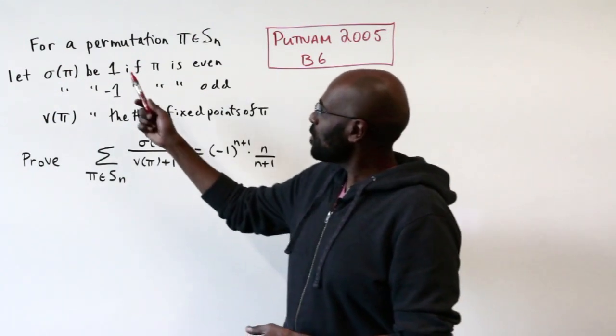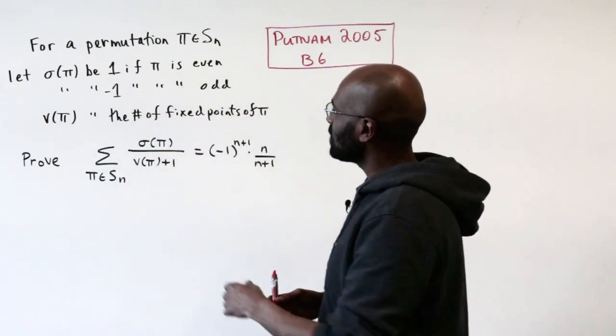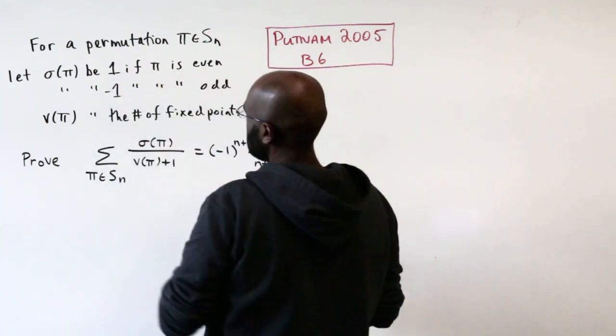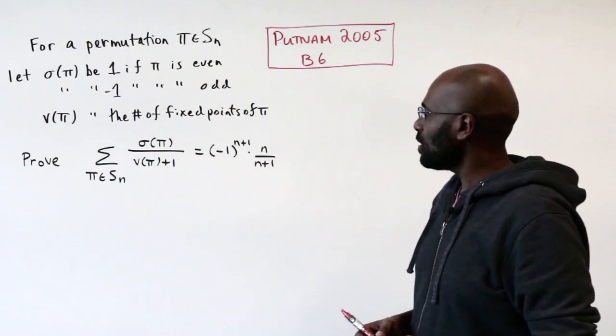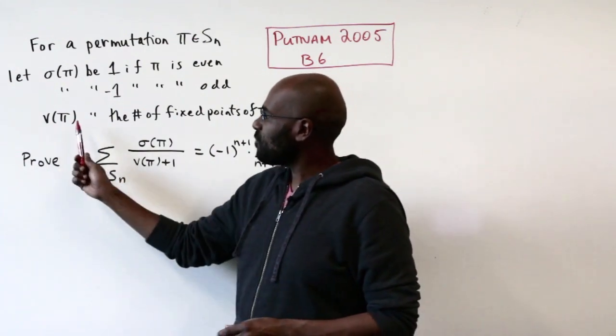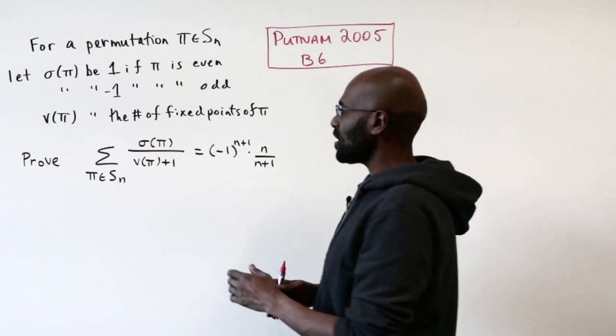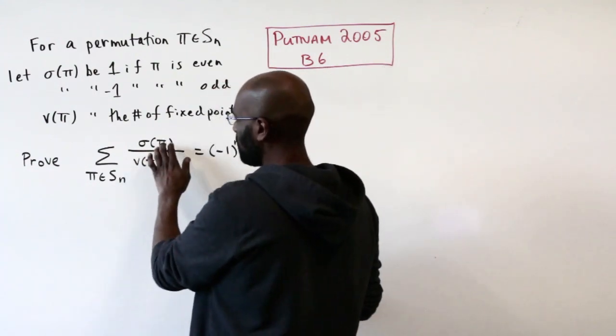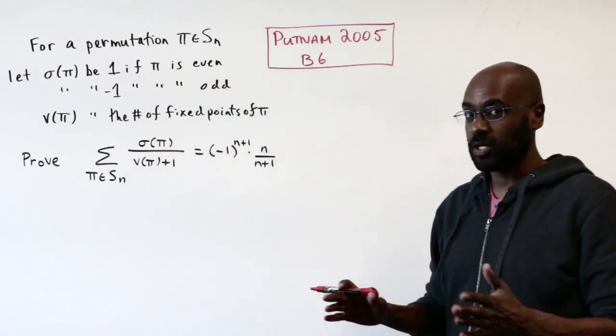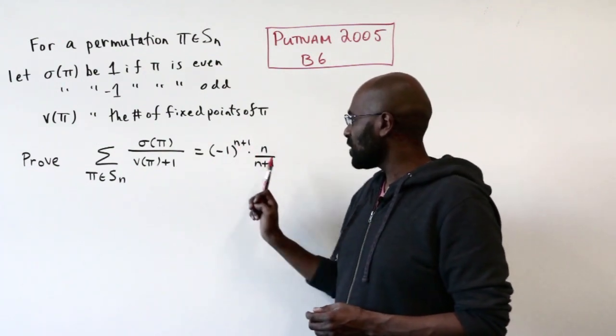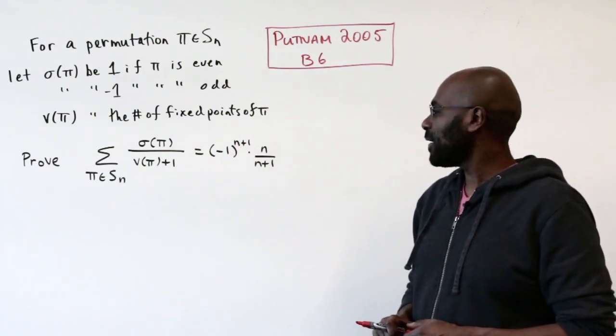The problem states: for permutation π in Sn, let σ(π) be 1 if π is even and -1 if π is odd, and let ν(π) be the number of fixed points in π. Prove that the sum over all π in Sn of σ(π) over ν(π) plus 1 is (-1)^(n+1) times n over n+1.